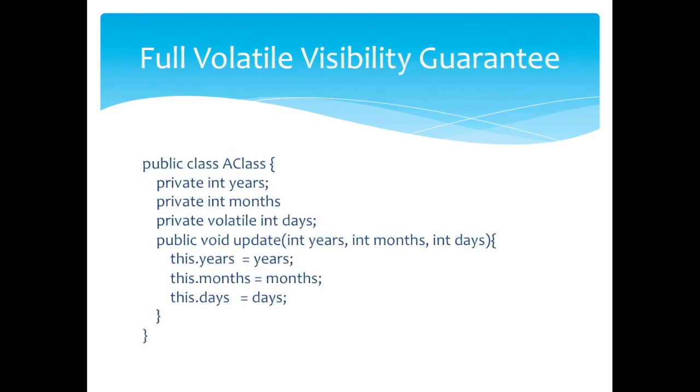In this update method, it writes three variables, of which only days is volatile. As per the full volatile visibility guarantee, when a value is written to days, then all variables visible to the thread are also written to main memory. So here, when a value is written to days, the values of years and months are also written to main memory.